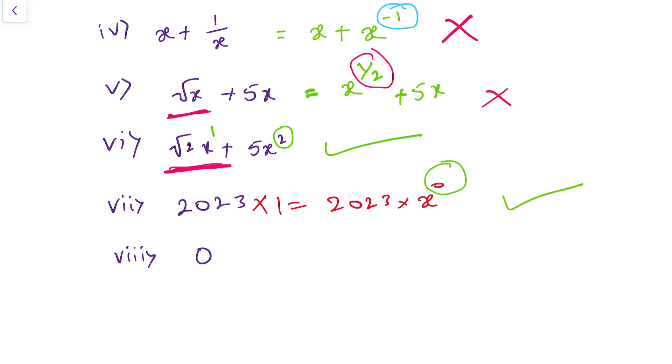What about the number 0 itself? Of course, 0 is also a constant. So definitely, this is also a polynomial.